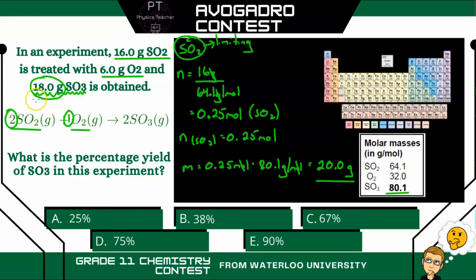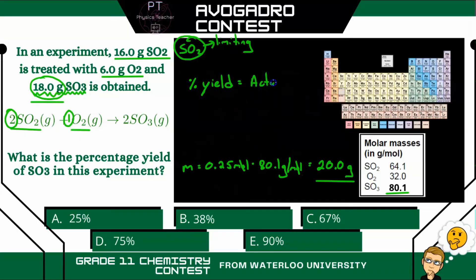What we actually got was 18. So let's now calculate the percentage yield. All right, so percentage yield is equal to the actual yield divided by the theoretical yield times 100%. So what we actually got was 18 grams, divide that by our theoretical value, which is 20 grams, multiply that by 100%, and we get 90%. So our percentage yield is 90%, or our answer is E.